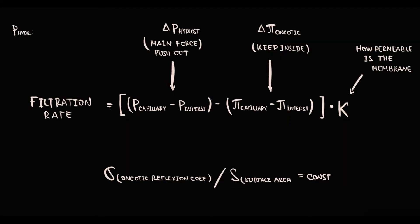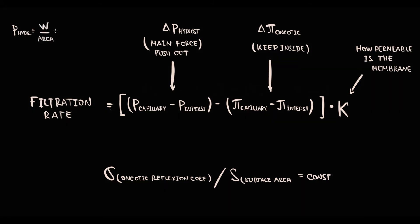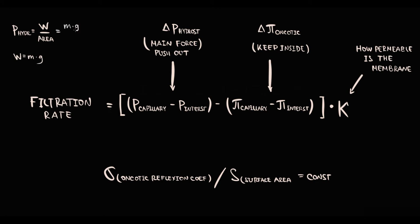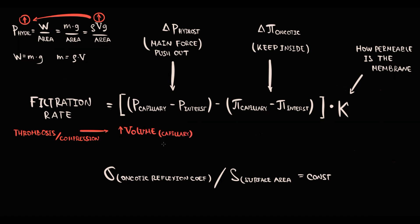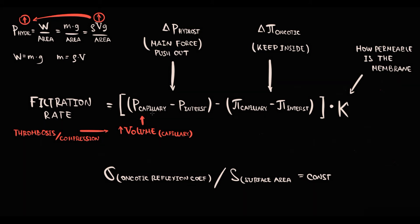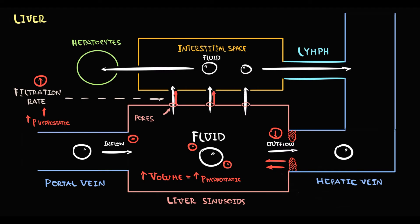Hydrostatic pressure is basically the weight of fluid acting on a particular area. Weight of fluid equals mass of fluid times the gravity constant, and mass of fluid equals fluid density times fluid volume. So volume and hydrostatic pressure are directly related. In venoclusive disease, thrombosis or compression of liver sinusoids by fibrosis causes obstruction to flow, increasing the volume of fluid inside the sinusoids, which increases hydrostatic pressure and results in increasing filtration rate — the higher the capillary hydrostatic pressure, the higher the filtration rate, and the more fluid crosses from sinusoids to the interstitial space.